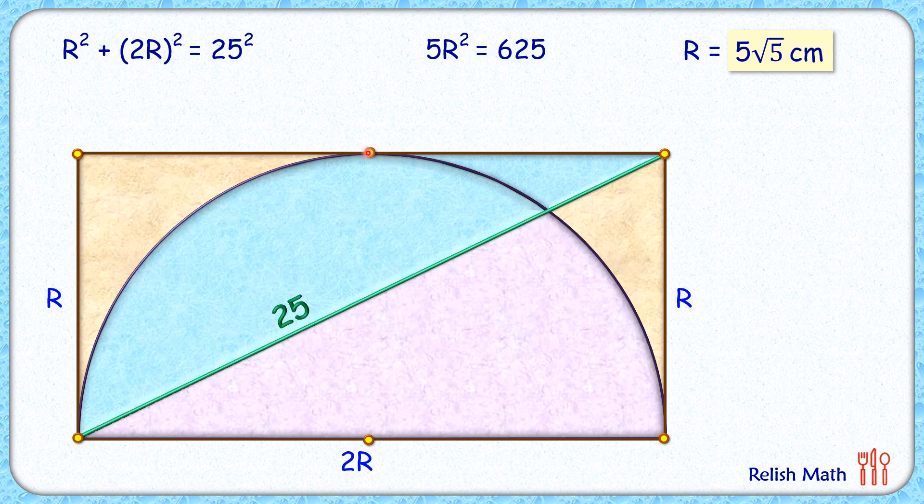Now let's join the point of tangency to the center of this semicircle. If we check these two triangles, this blue triangle and this purple triangle, these two angles are vertically opposite angles and thus equal. The rectangle lines are parallel, and this green diagonal acts as a transversal. These angles are alternate interior angles, thus equal.